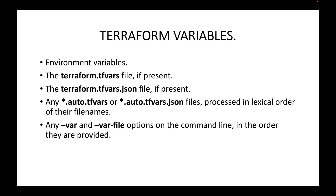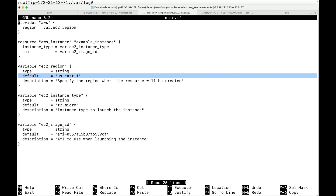This is the order in which Terraform looks for values when declaring variables — it always picks the latest value, overriding the previous one. It first checks environment variables, then terraform.tfvars, then tfvars.json, then auto.tfvars or auto.tfvars.json, and finally -var or -var-file command line options. In the next session we will look at how you can pass variable values from the command line, instead of using the default value as we did here.